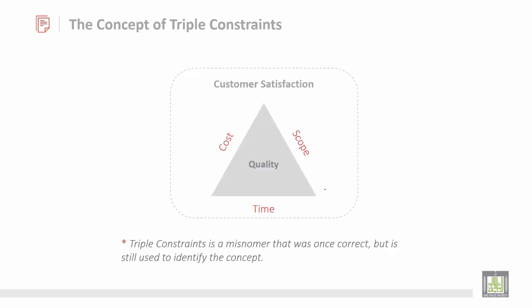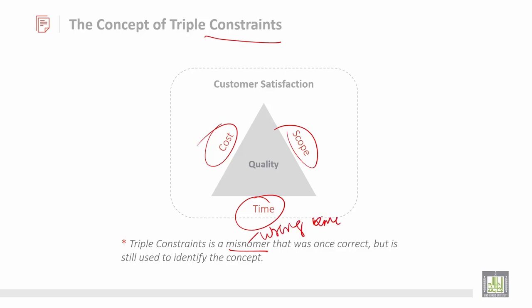Triple constraint is a limitation. These three factors — cost, scope, and time — are to be taken into consideration. Triple constraint is a misnomer. Misnomer means a wrong name or wrong method — it is a method that was once correct but is still used to identify the concept. These three factors are used to adjust customer satisfaction based on the quality factor.